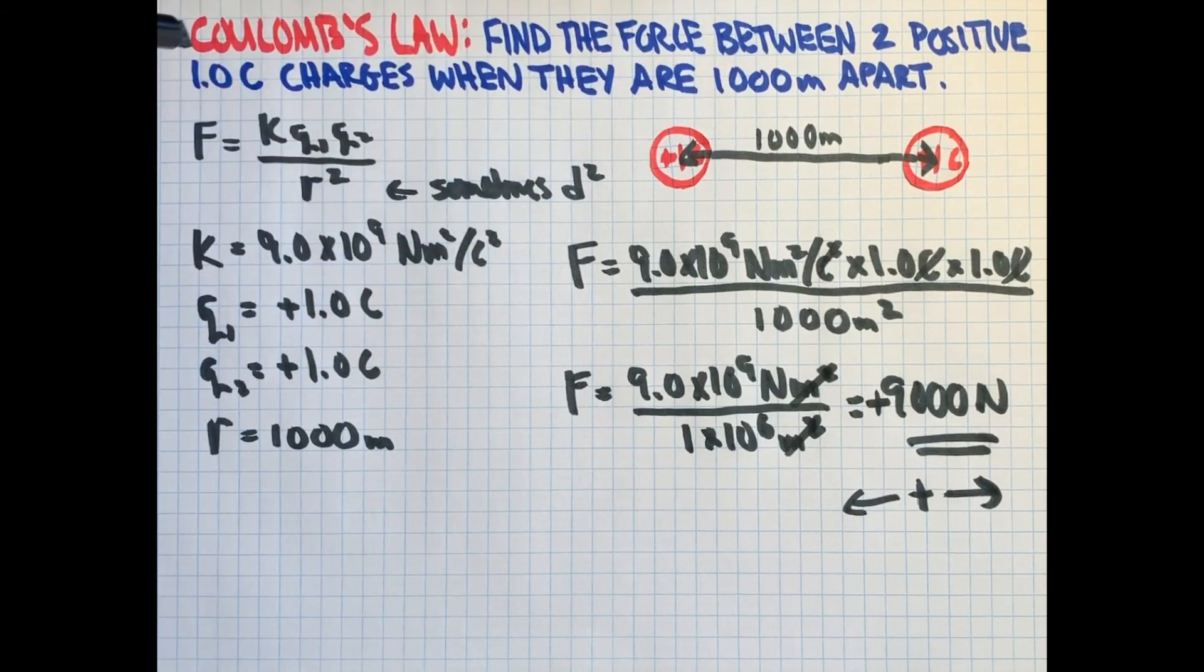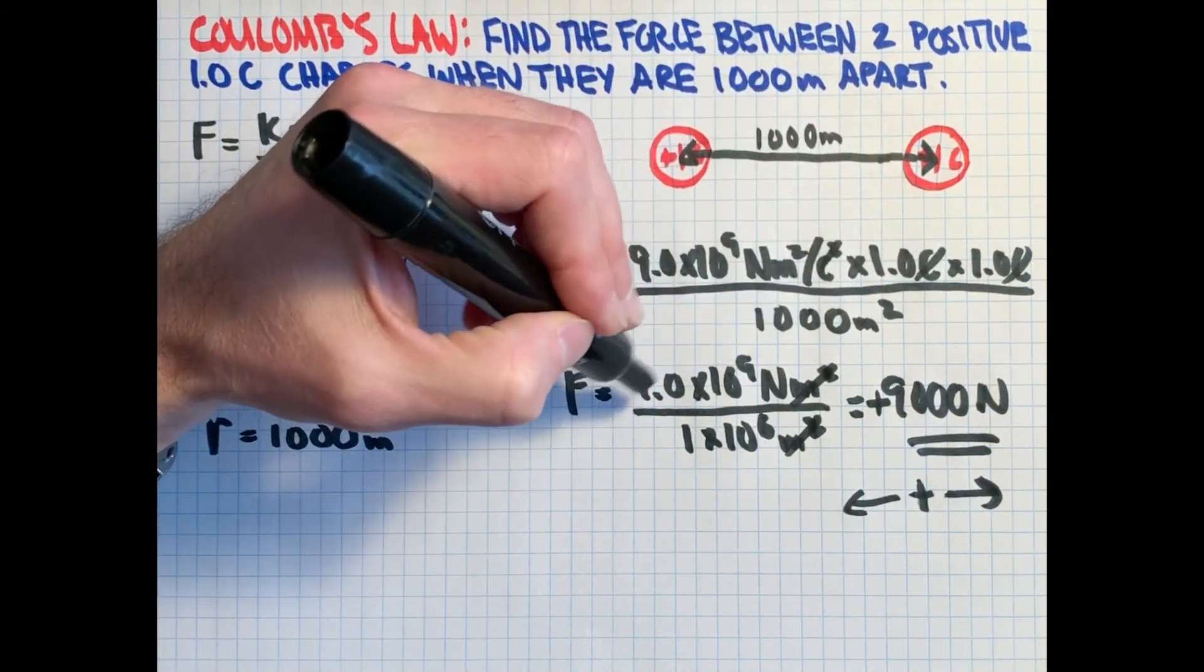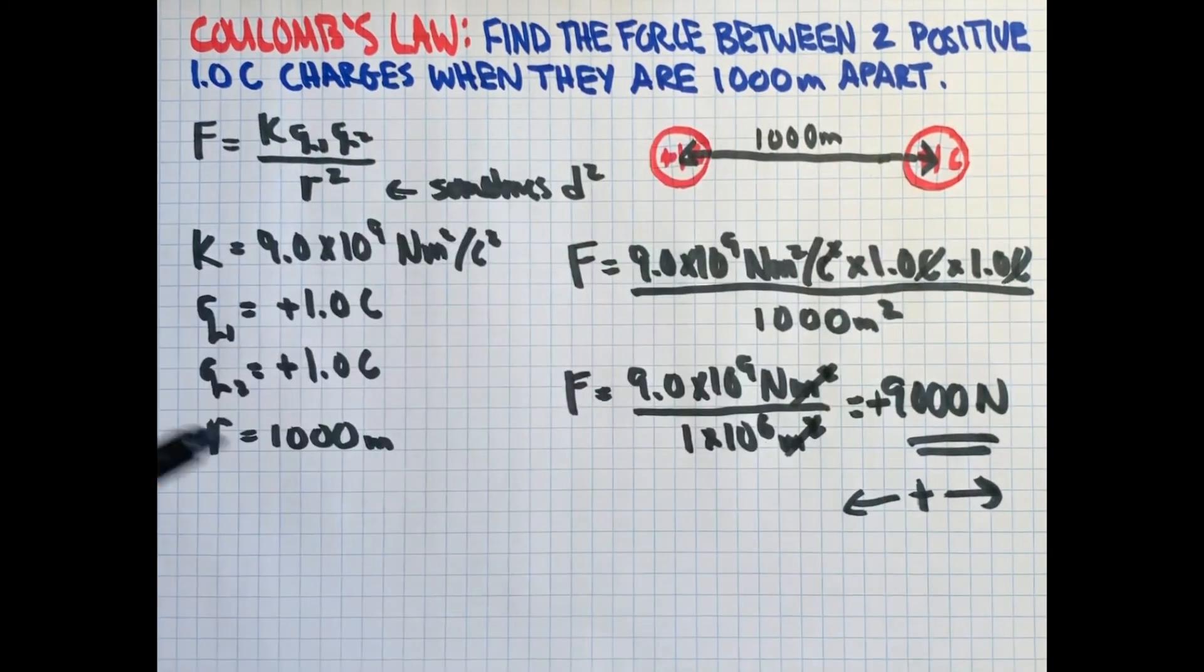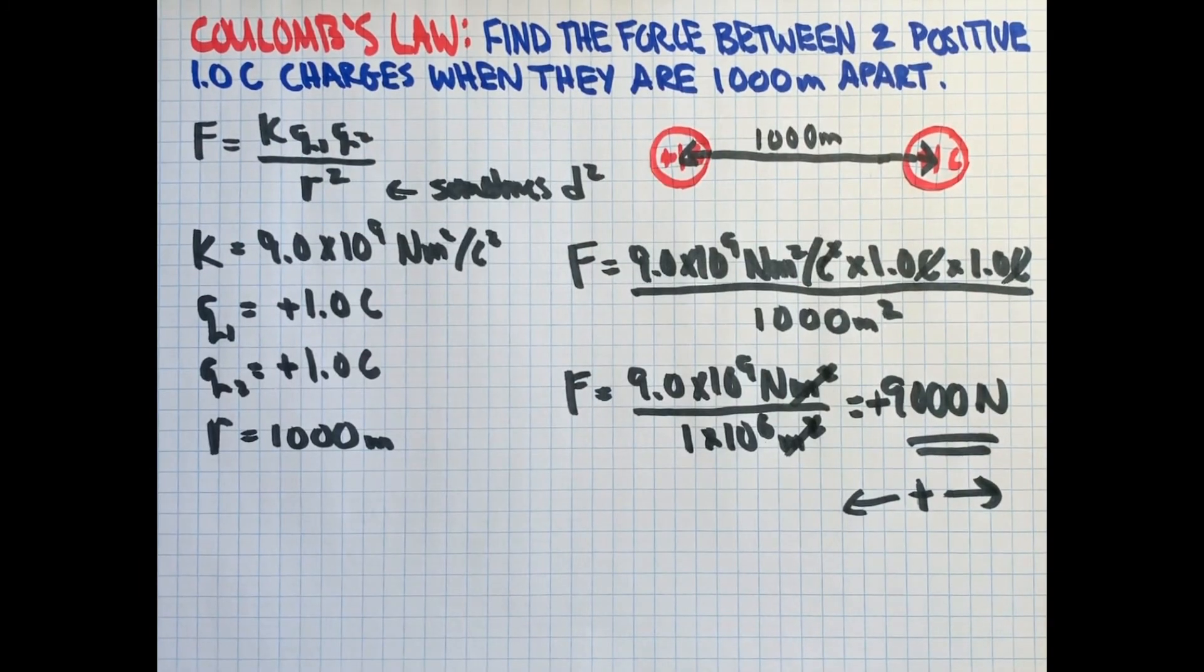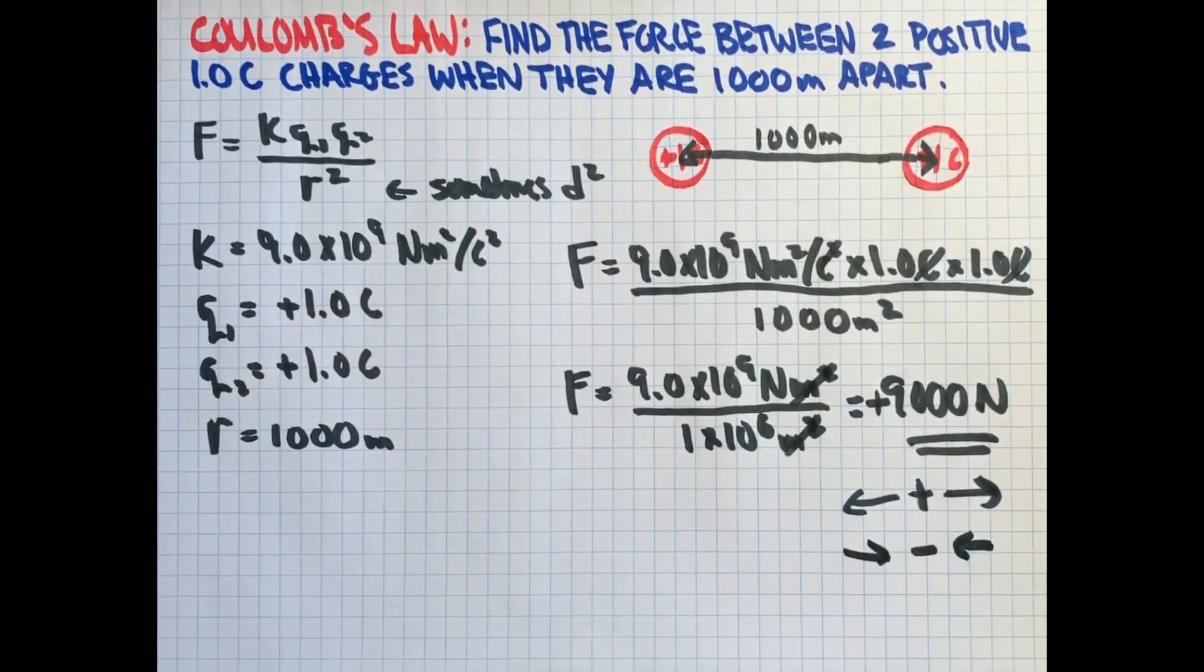Note, if I had said one of these charges was a positive 1 coulomb and the other was a negative 1 coulomb, then we would have had a negative number which would have given us a negative force. And so a negative force when using this equation means attractive. So just keep that in mind. That'll be a convention that we use throughout.